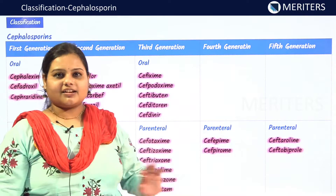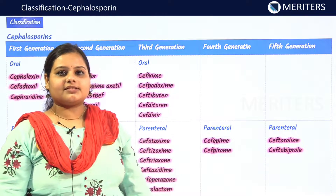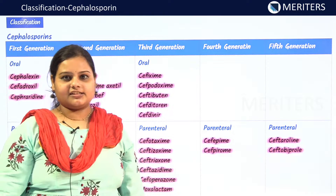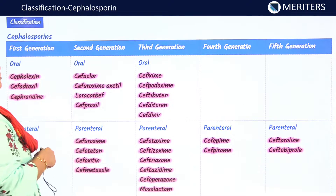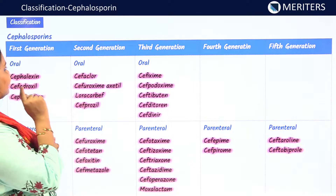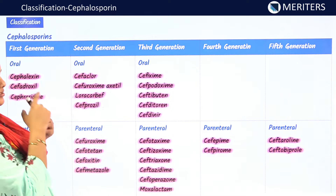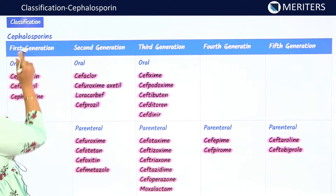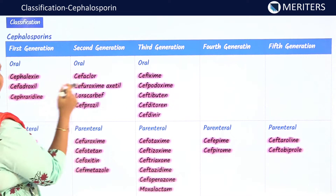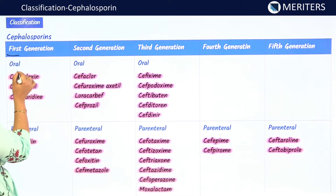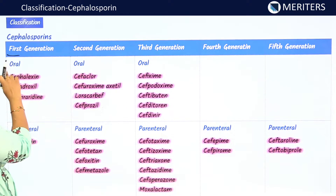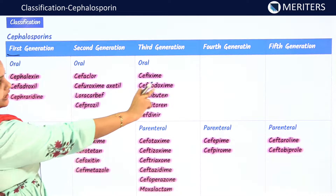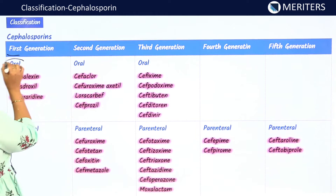The classification seems a little difficult but we'll make it easier. There are five generations. If you look at the first generation, you will have both oral and parenteral drugs. Almost every generation has oral and parenteral except the fourth and fifth.